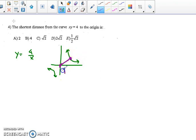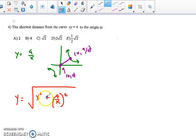So the two points that we're trying to find the distance between are the origin and the point x, 4 over x. So to write an expression for the distance, we're going to use the Pythagorean theorem. So we have the square root of x minus 0 squared plus 4 over x minus 0 squared. So it's really the distance formula.